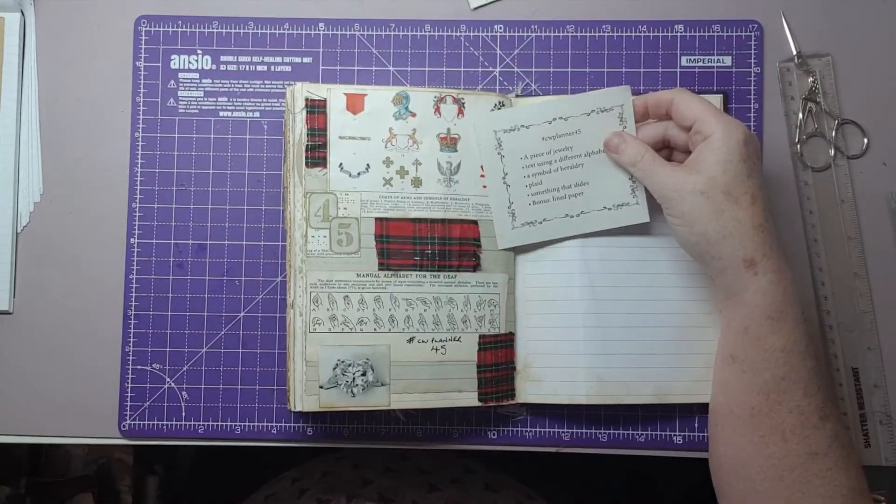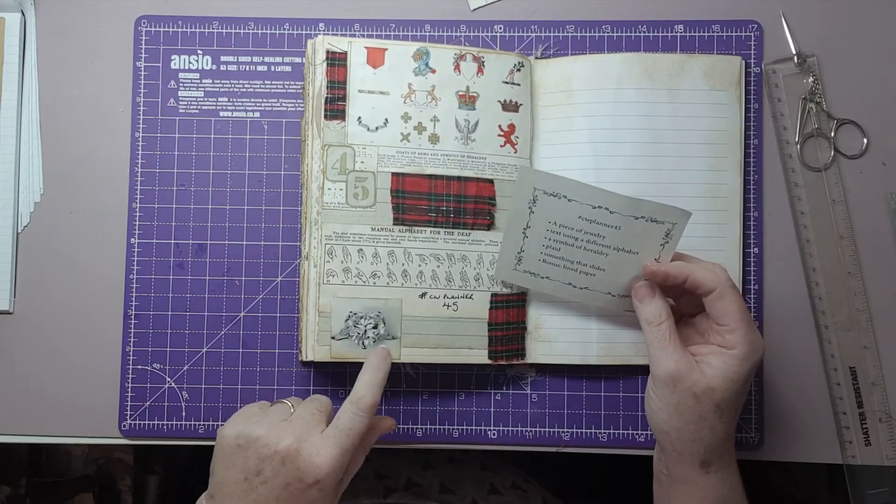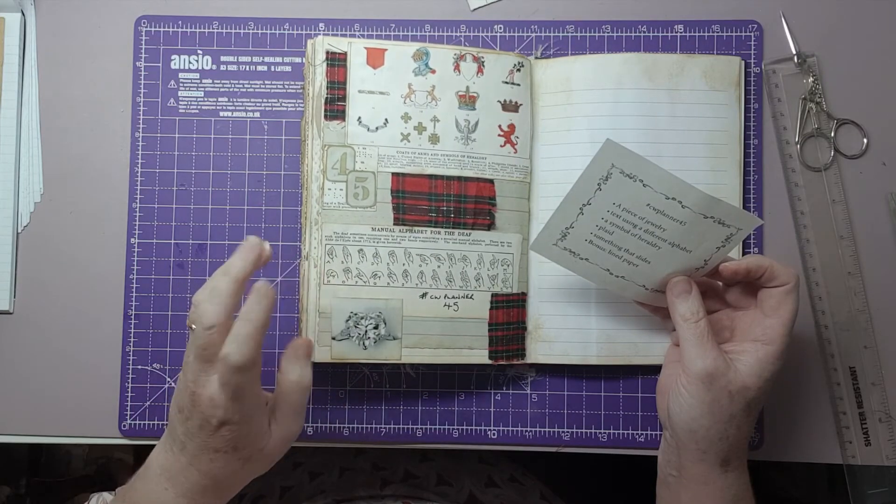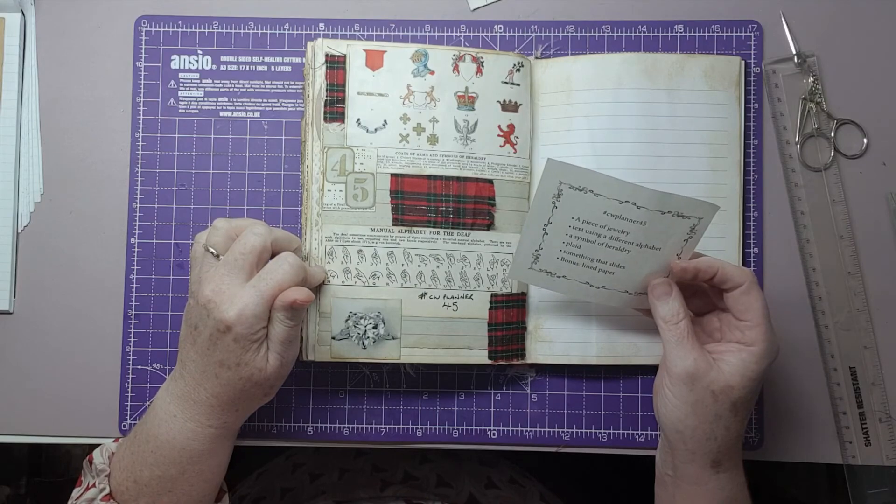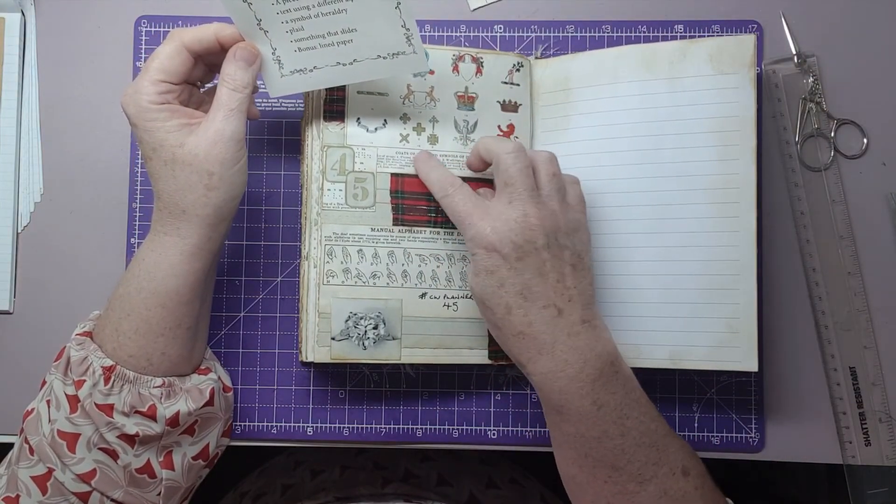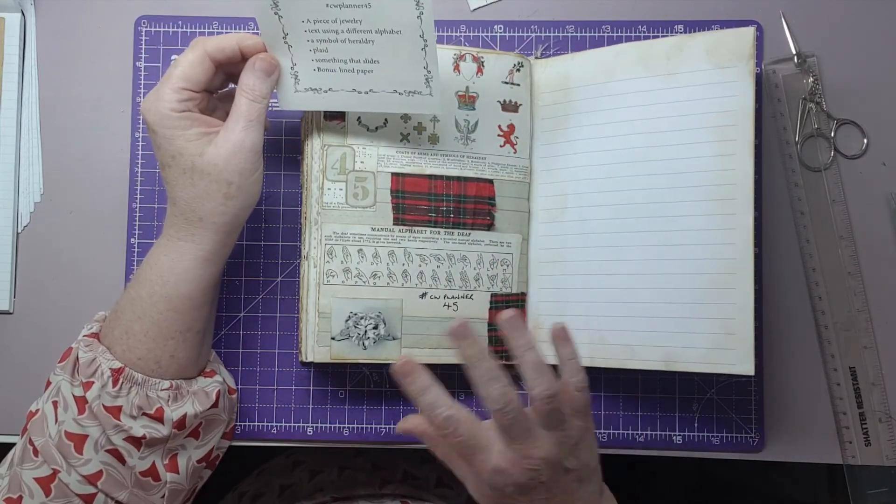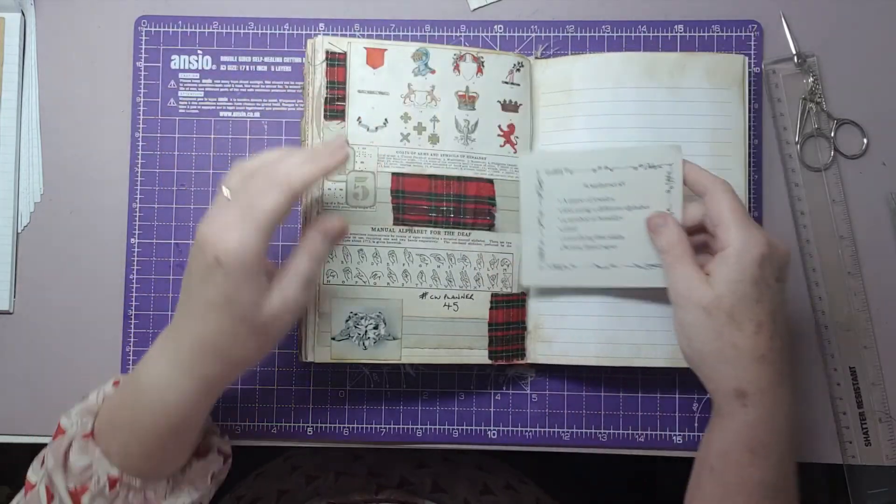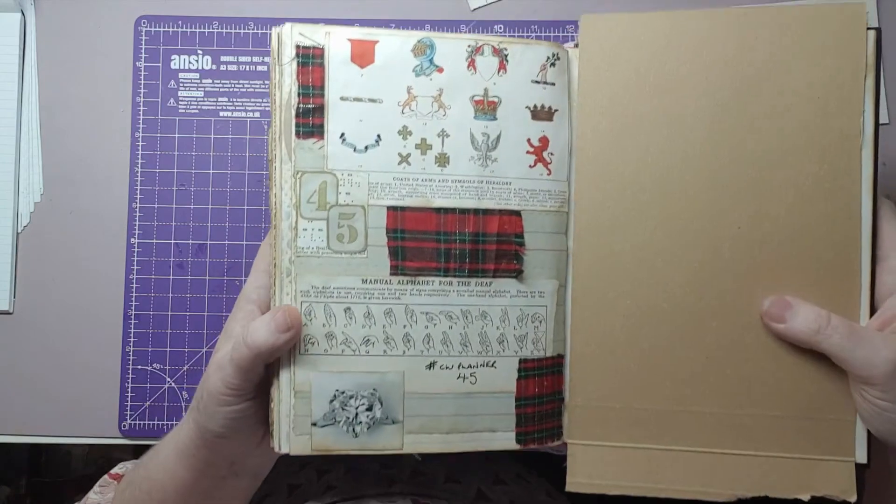So we've chosen four of the prompts and the bonus, left one of the prompts out. So we have a piece of jewellery here, we have a little diamond ring. And we have text using a different alphabet, so we have the manual alphabet for the deaf, which is hand signs, the signing. We have a symbol of heraldry, so we have a page here with all different symbols of heraldry, and I've left the key on so that you can tell what it's there for. We have plaid ribbon here, here and here. We don't have something that slides, we've missed that out today. And then we have lined paper, which is in the background here, here and here. And that's it for today. So let me just find something, cover that side up. And there we have it, that is hashtag CWPlanner45.